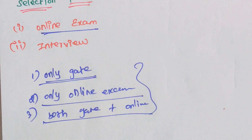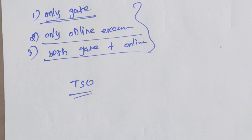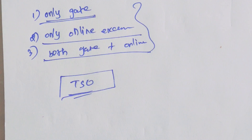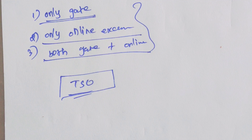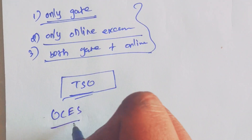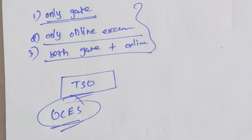Once selected, in the first year you will be a TSO — Training Scientific Officer. The training period salary is nearly 35,000 to 36,000 per month. After one year, the training process continues through a course called OCE — Orientation Course for Engineering graduates or science postgraduates. This one-year course is conducted at different locations, including Mumbai.